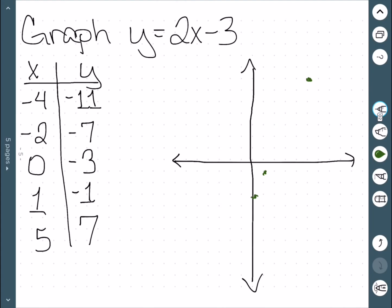And then in this case, negative 4, negative 11 is a little off of our graph, but that's okay because we can see that the general pattern here is just a line. So, here we have the graph.